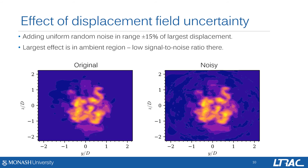We have also examined the effect of random noise in the displacements used for the tomographic reconstruction. With added random noise in the range of ±15% of the largest displacement, a reasonable reconstruction of the jet core is still achievable. The largest impact is seen outside the jet, where the signal-to-noise ratio is relatively lower.